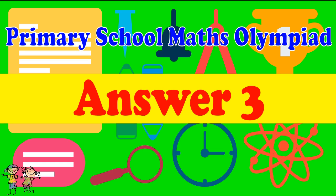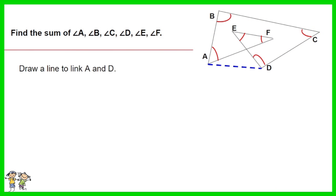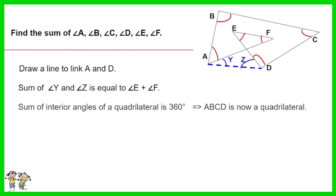Answer for question 3: Draw a line to link point A and point D. From the diagram, you could see that the sum of angle Y and angle Z is equal to the sum of angle E and angle F. Sum of interior angles of a quadrilateral is 360 degrees. ABCD is now a quadrilateral. Thus sum of angle A, angle B, angle C, angle D, angle E, and angle F is equal to sum of angle A, angle B, angle C, angle D, angle Y, angle Z. The answer is 360 degrees.